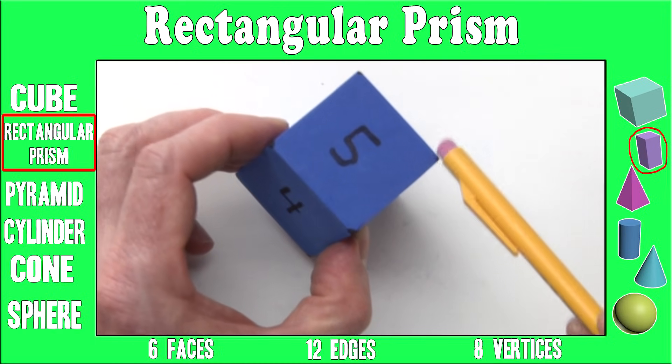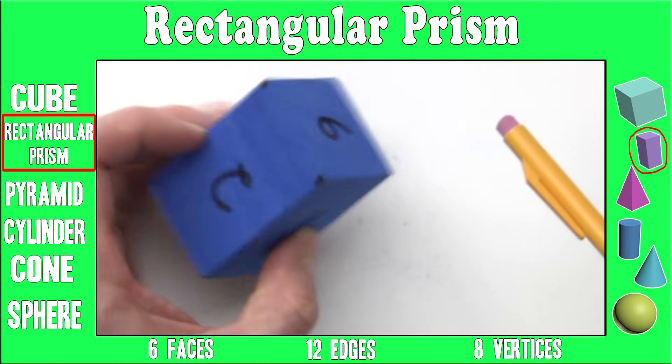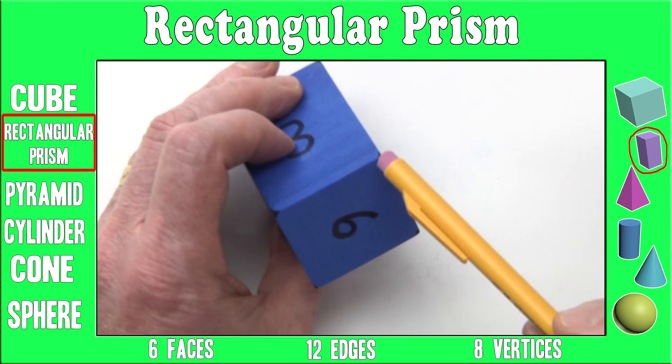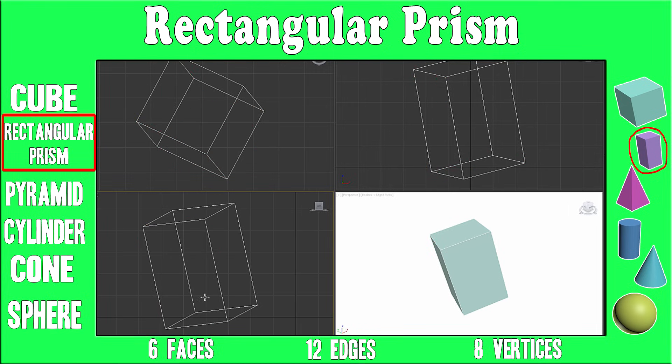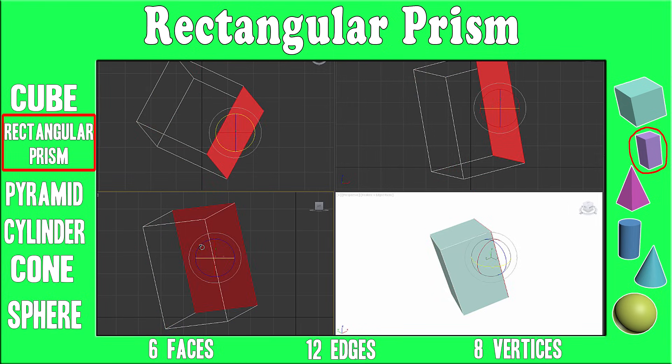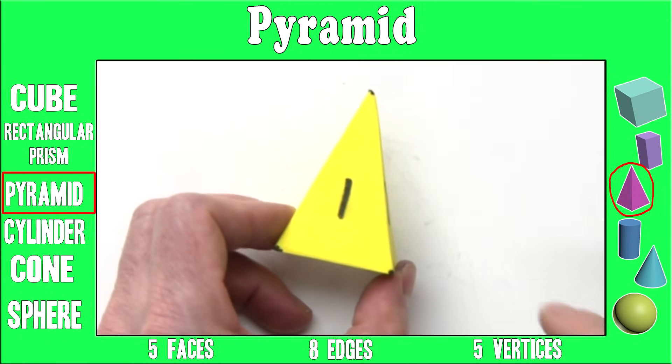A rectangular prism has eight vertices. One, two, three, four, five, six, seven, eight. A rectangular prism is like a cube, but just longer. Same number of faces, edges, and vertices.